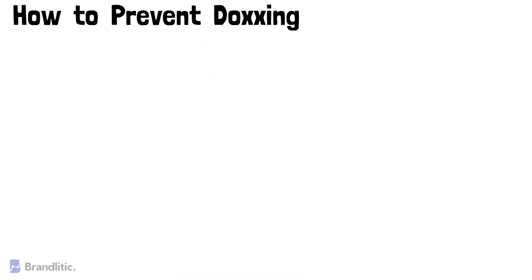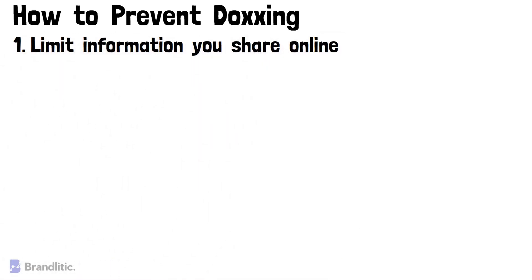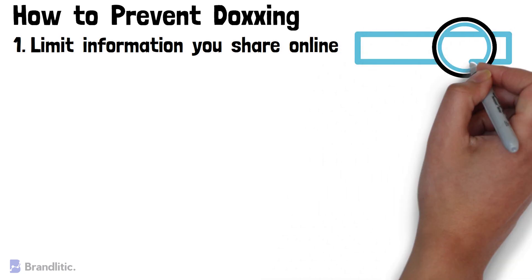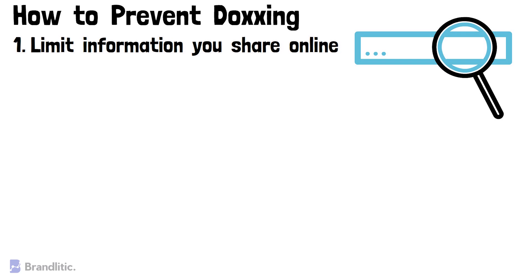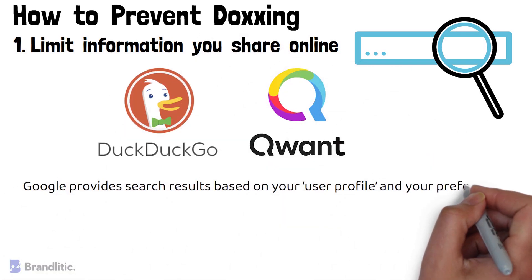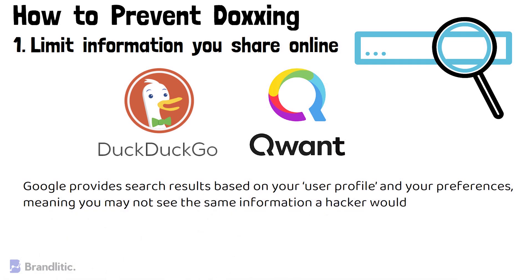Now let's talk about how to prevent doxing. There are steps you can take to avoid doxing or at least minimize the risk. 1. Limit the information you share online. Try entering your name into a search engine, because it's the first place cyberbullies will go to collect information about you. Use privacy-oriented search engines like DuckDuckGo or Qwant, as Google provides results based on your profile and preferences, meaning you may not see the same information a hacker would. Once you know what info about you is out there, try stripping as much of the content as possible.